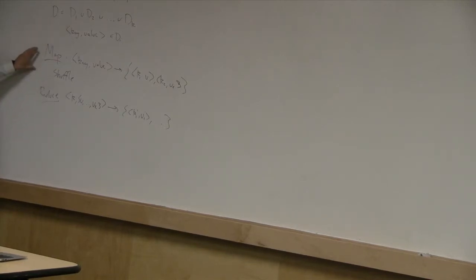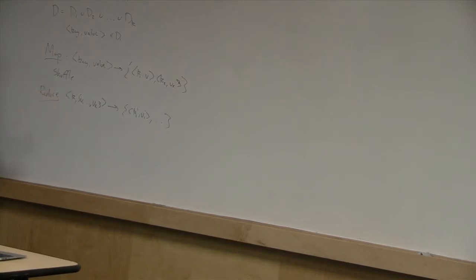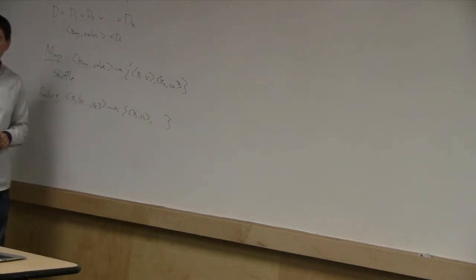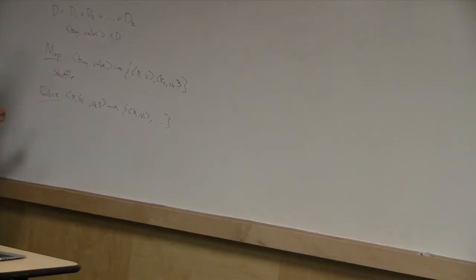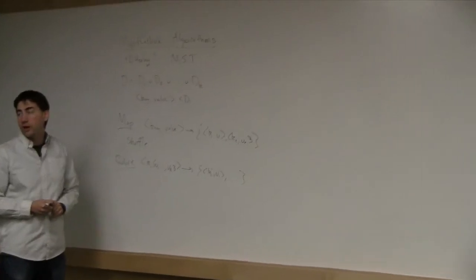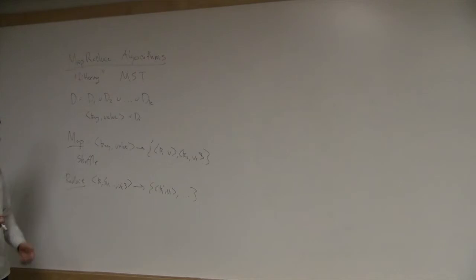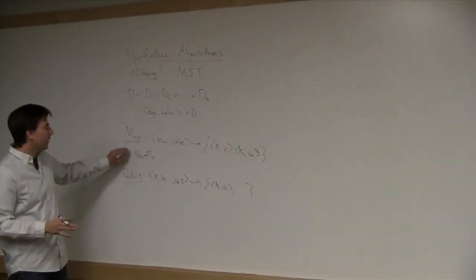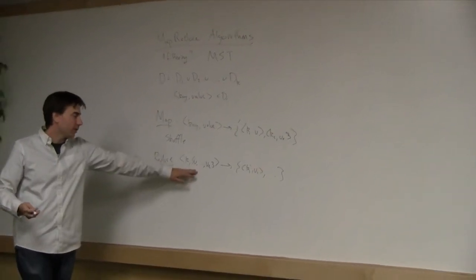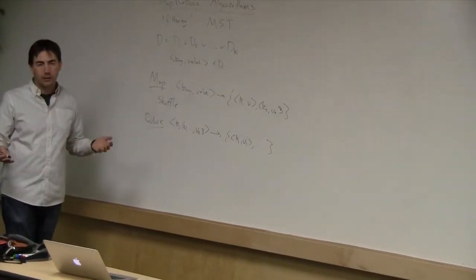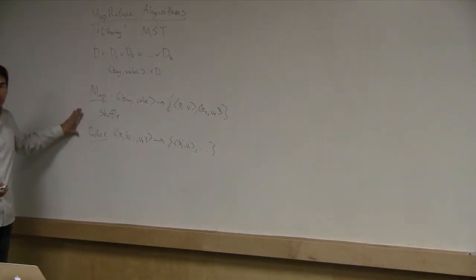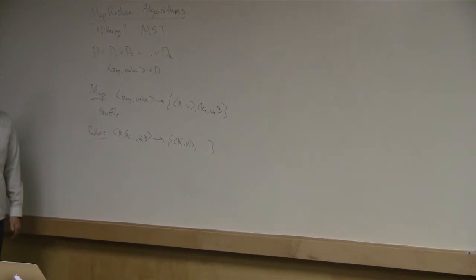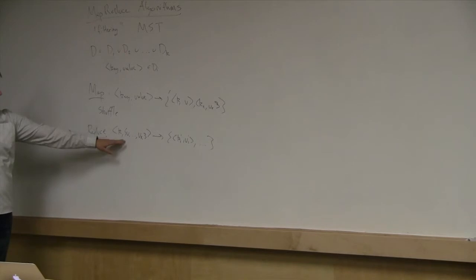We're restricted to looking at things in small pieces and can only move them together by shuffling — things with the same key wind up on the same machine. The reason this works so well is it's typically very simple to write each map and reduce operation, and it's very robust to node failures. But you don't want one key to have a huge number of values — that takes too much time. So our constraints are to limit the number of rounds and not have too much information associated with each key.